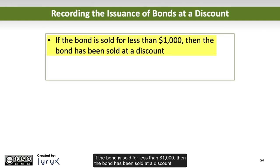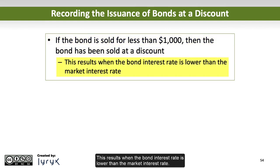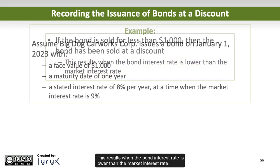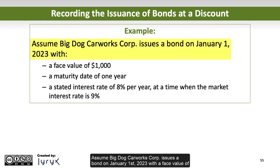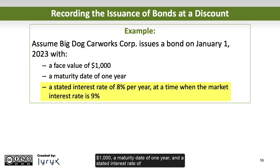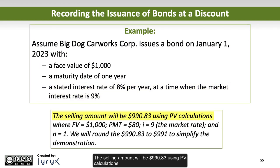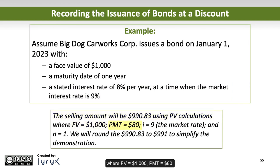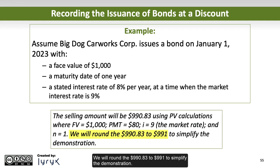If the bond is sold for less than $1,000, then the bond has been sold at a discount. This results when the bond interest rate is lower than the market interest rate. Assume Big Dog Carworks Corporation issues a bond on January 1, 2023, with a face value of $1,000, a maturity date of 1 year, and a stated interest rate of 8% per year, at a time when the market interest rate is 9%. The selling amount will be $990.83 using PV calculations where FV = $1,000, PMT = $80, I = 9 (the market rate), and N = 1.